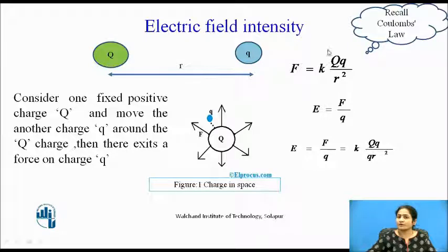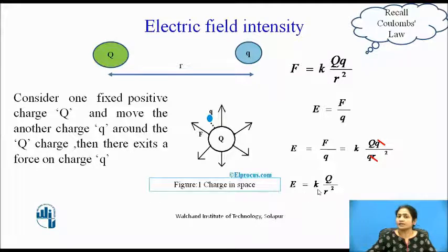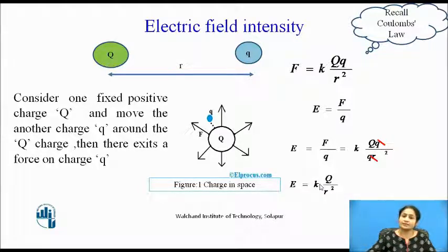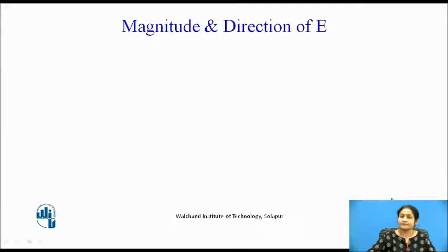When we know the formula for force — that is K into Q upon R square — and divide by the small q, then this q and q cancel out, and you remain with E equal to K into Q upon R square. Here Q is the positive charge we are considering, and R is the distance between the two charges. K is the proportionality constant. When you substitute the proportionality constant, it will be 1 upon 4 pi epsilon, giving E equal to Q upon 4 pi epsilon R square.